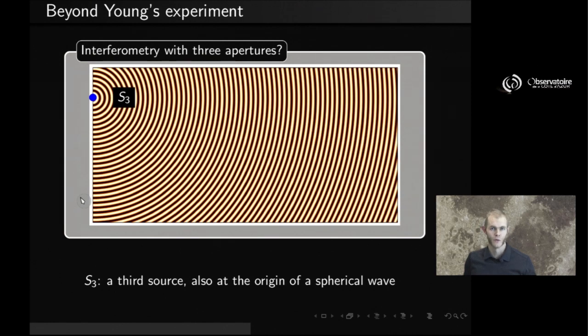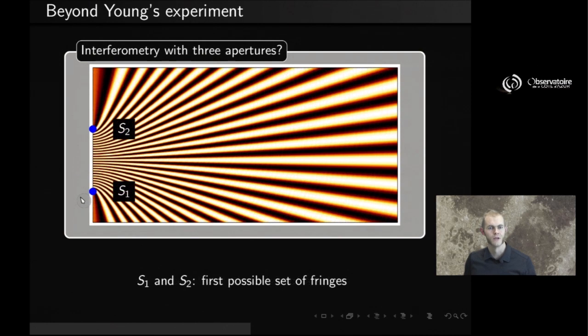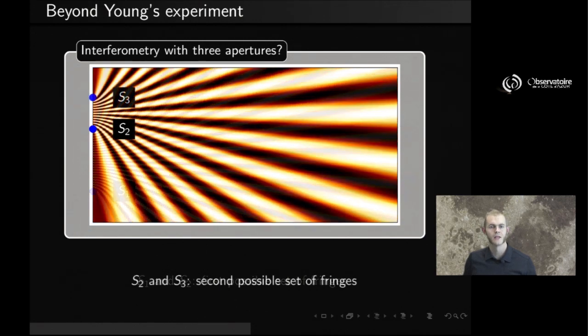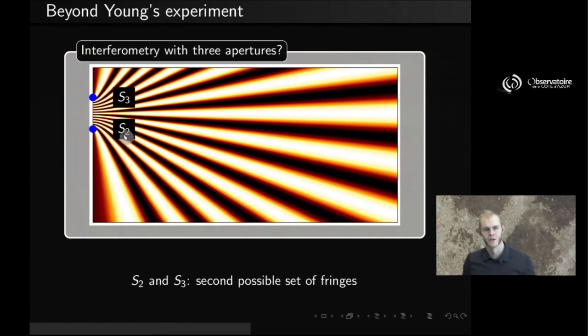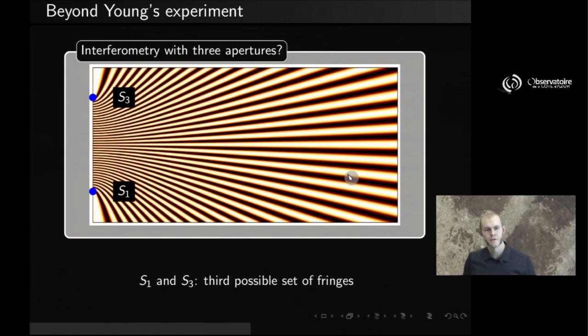You can think of the one we just looked at, S1 and S2, that's going to produce the fringe pattern we just observed in the previous experiment. But you also have S2 with S3, and you're going to get a slightly different fringe pattern with the spacing of the fringes that changes because the distance between S2 and S3 is a little shorter. And of course, you also have S1 and S3, which produces thinner fringes simply because the distance between S1 and S3 happens to be larger than everything else.